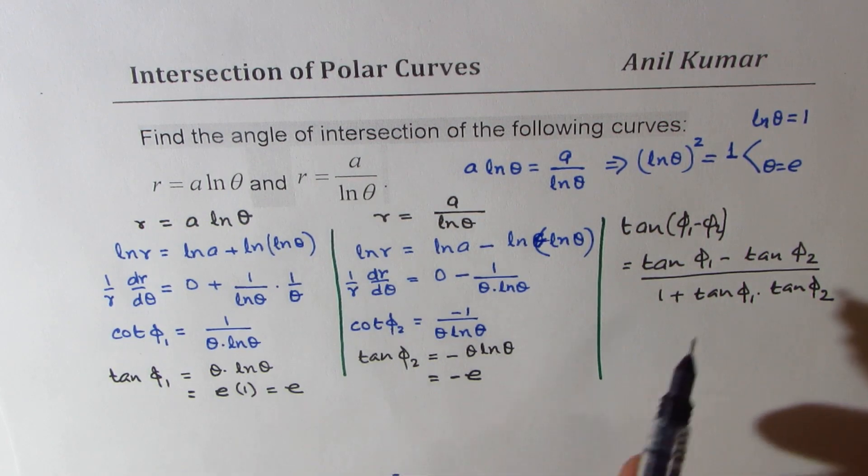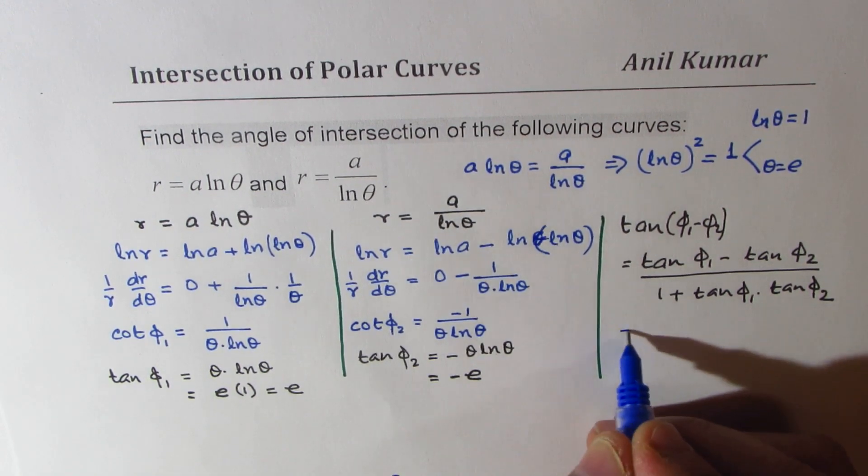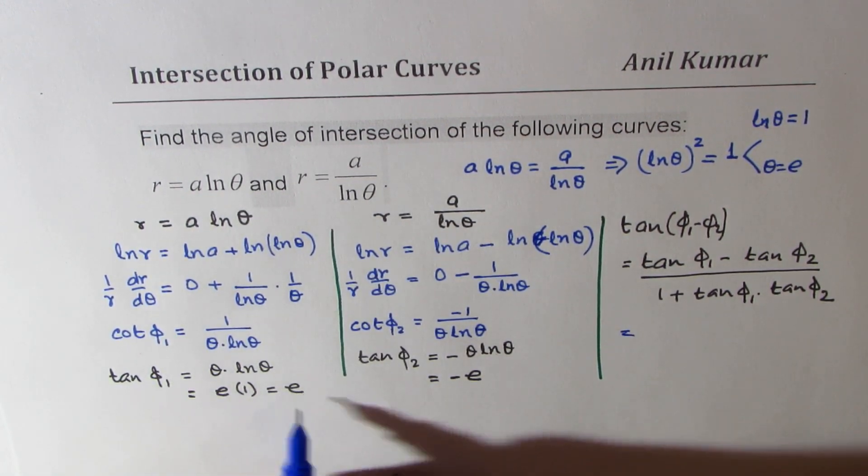Since we know these values, we can just substitute them here. So we get this as equal to, now substituting these values, tan phi 1 is e for us.